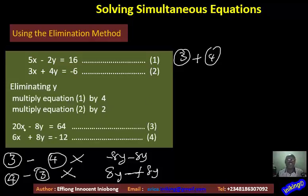When you do that, you're going to have 20X plus 6X, and that will give me 26X. And when I say minus 8Y plus 8Y, then it will cancel out and give you 0Y. And you can now go straight and say this is 64 plus minus 12. That will give us 64 minus 12, and that is 52.